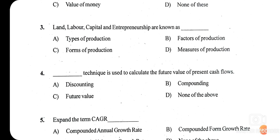Question four: which technique is used to calculate the future value of a present cash flow — discounting, compounding, future value, or none of these? The technique used is the compounding technique. Compounding is used to calculate the future value of a present cash flow; based on the present cash flow, we find the future value using compounding.